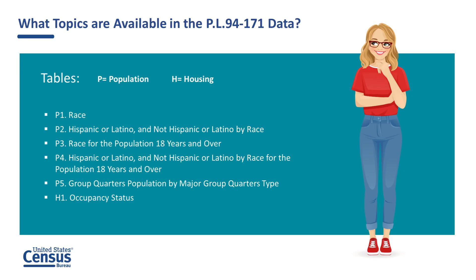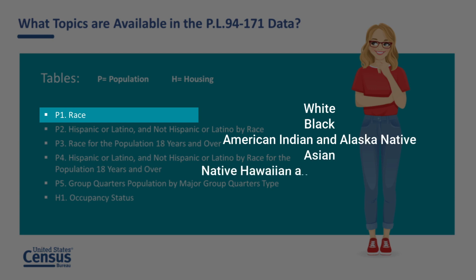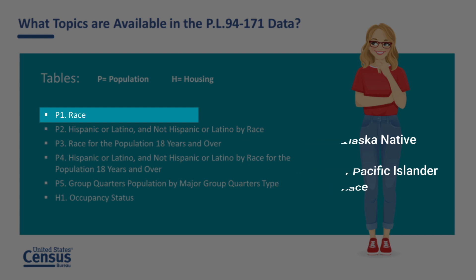The official titles of the six tables that will be available to you are as follows. The P1 table presents the population breakdown by race. Redistricting data is offered for White, Black, American Indian and Alaska Native, Asian, Native Hawaiian and other Pacific Islander, and some other race. It is also available for those who select any combination of these six races.